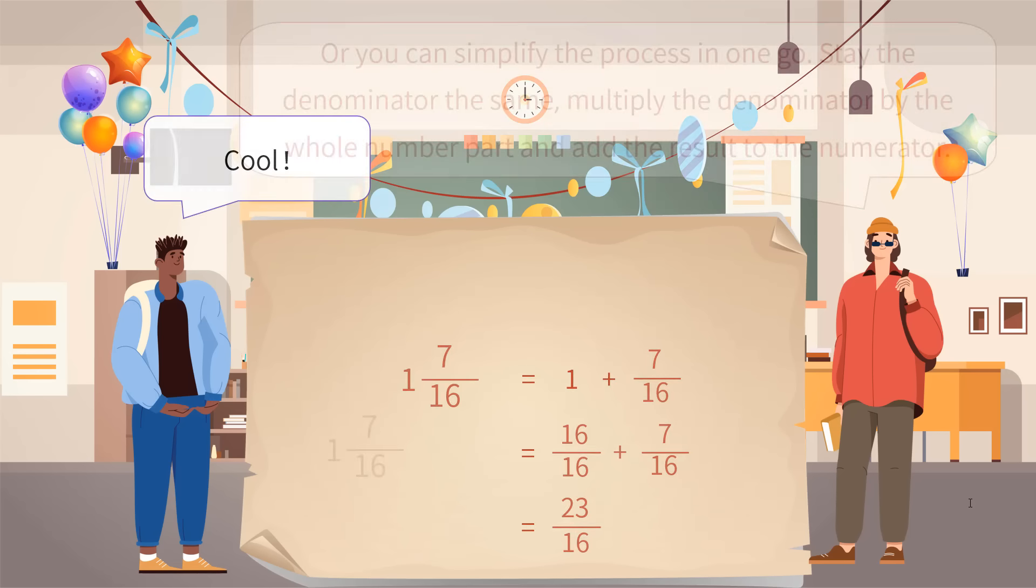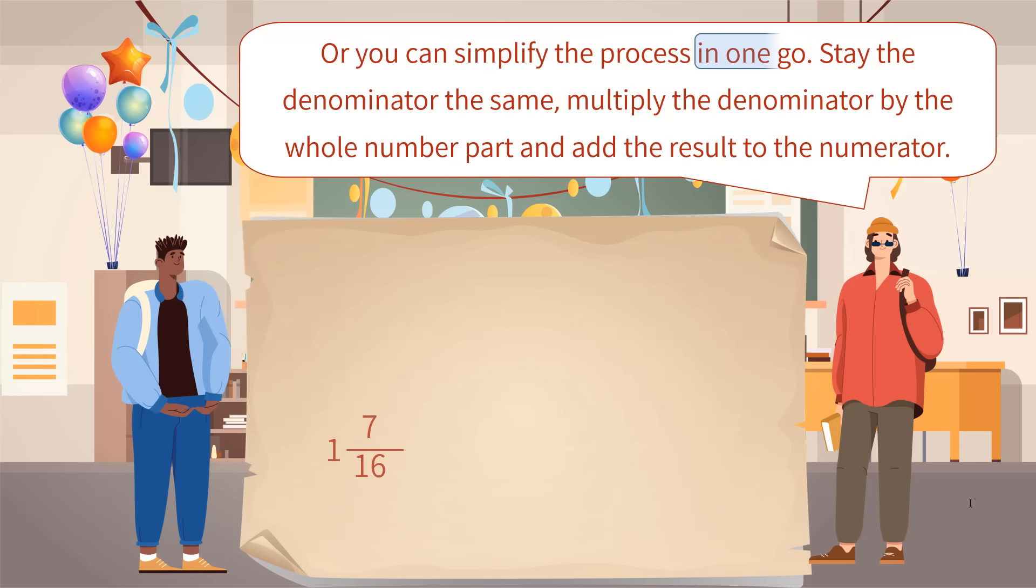Cool. Or you can simplify the process in one go. Leave the denominator the same. Multiply the denominator by the whole number part and add the result to the numerator.